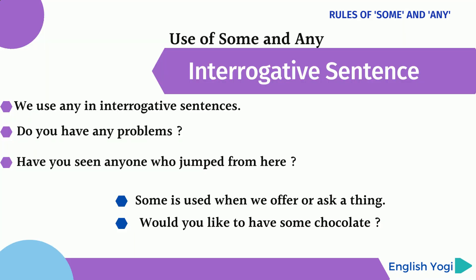The second rule of 'some' and 'any' is about interrogative sentences. In question sentences, we use 'any', 'anybody', 'anyone', 'anything'. For example: 'Do you have any problems?' The second example: 'Have you seen anyone who jumped from here?' So the rule is that 'any', 'anybody', and 'anything' are all used in interrogative sentences.